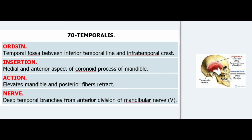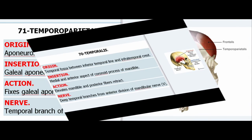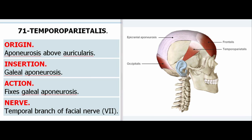70. Temporalis. Origin: Temporal fossa between inferior temporal line and infratemporal crest. Insertion: Medial and anterior aspect of coronoid process of mandible. Action: Elevates mandible; posterior fibers retract. Nerve: Deep temporal branches from anterior division of mandibular nerve (V).